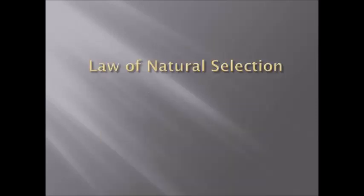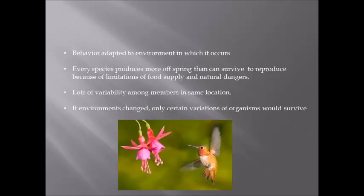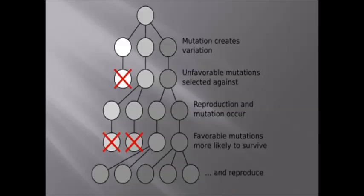And now we move on to The Law of Natural Selection. This law predicts that behavior is going to adapt to the environment in which it occurs. Every species produces more offspring than can survive to reproduce because of limitations of food supply and natural dangers.